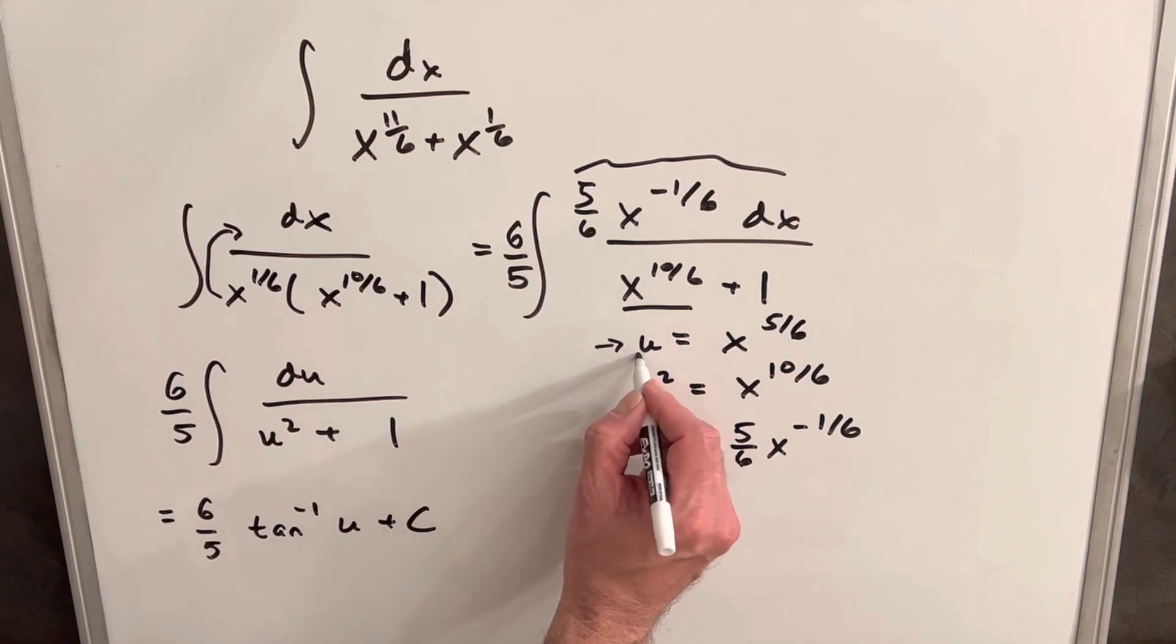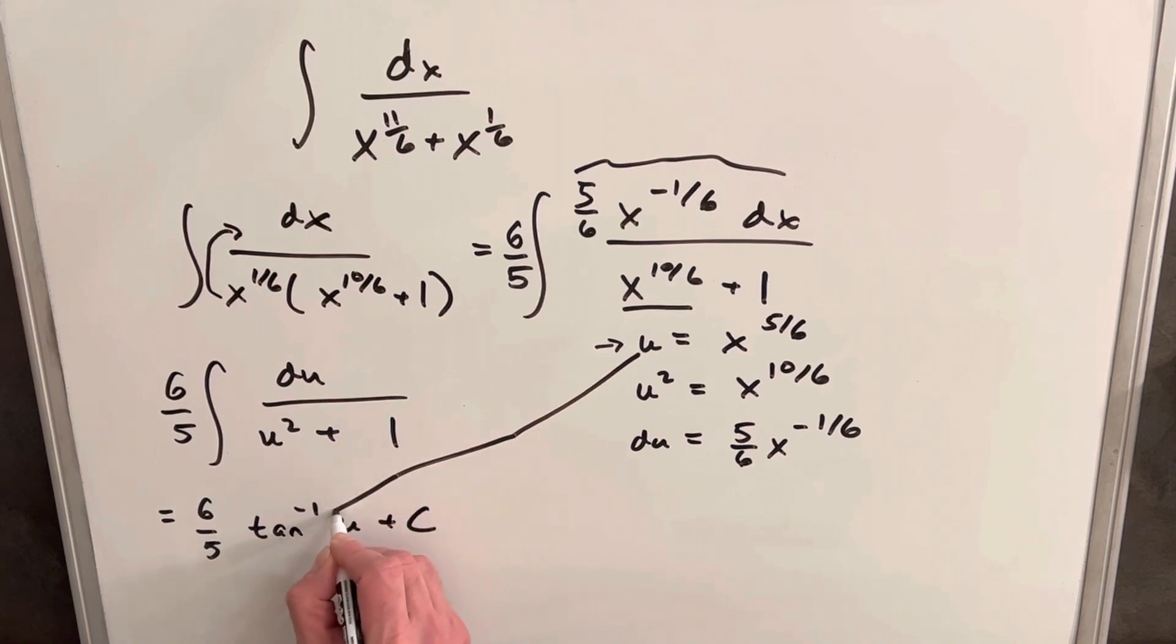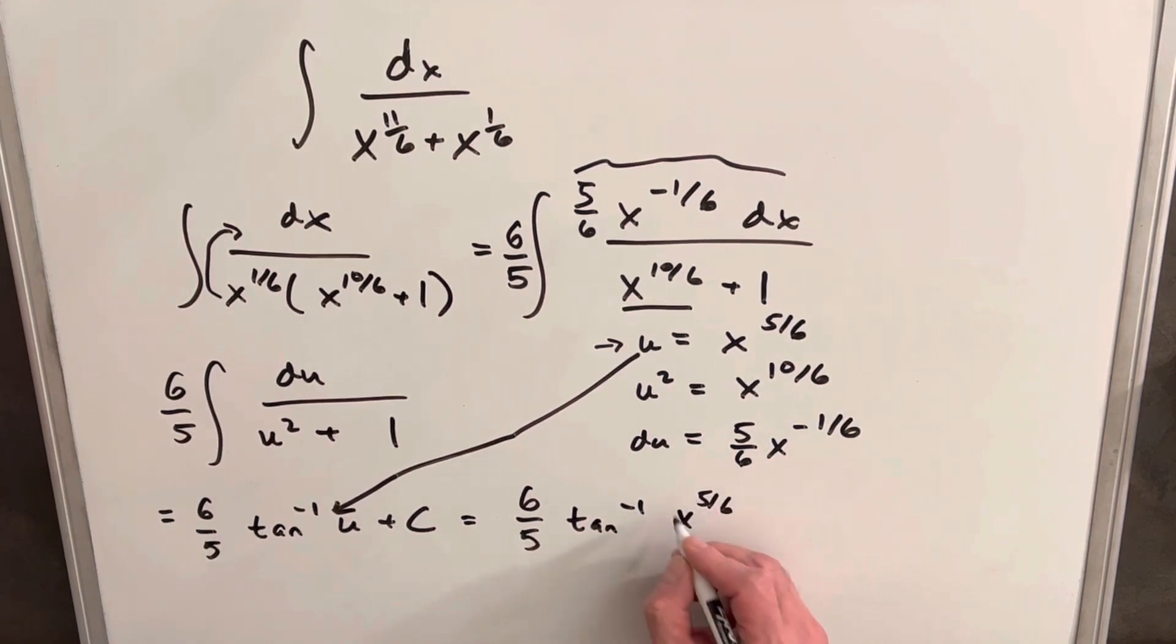Then we're just going to want to back substitute. And so for our final answer, we're going to have 6 over 5 arctan of x to the 5 over 6 plus c, and we're done.